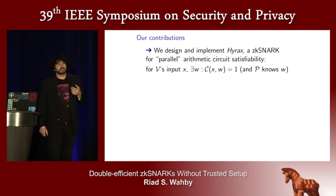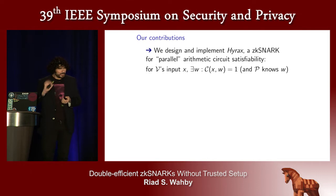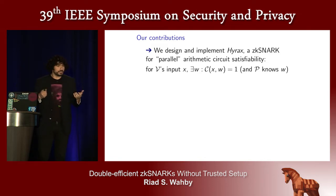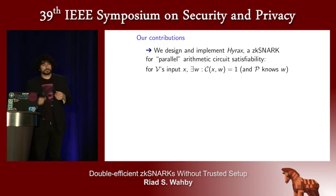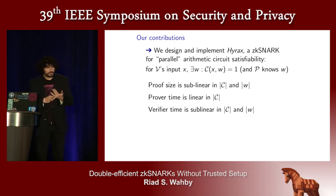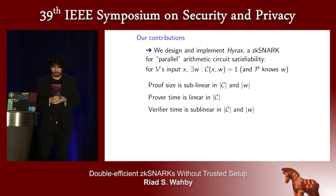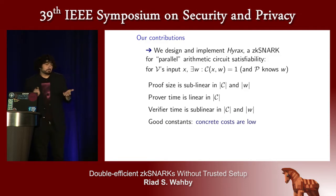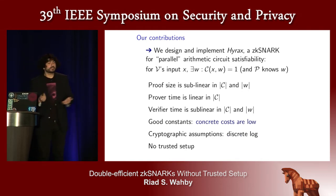The ZK snark my co-authors and I designed, we call it Hyrax, and it represents a new point in this space. Hyrax proves the satisfiability of arithmetic circuits. Imagine that there's some computation C, and the prover convinces the verifier that it knows a secret W — the witness — that makes that computation output true. For efficiency, Hyrax also requires this computation to have some repetitive structure; in the common case, it'll be made up of repeated copies of the same subcomputation. Hyrax has proofs that are asymptotically short, its prover is asymptotically optimal, and the verifier's work is asymptotically less than just running the computation. The concrete costs are good, and Hyrax relies on the discrete log assumption and requires no trusted setup.